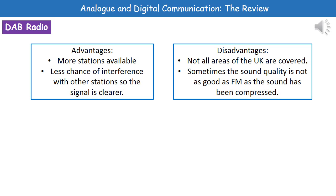There are, however, some clear disadvantages to DAB radio as well. The first is that not all areas of the UK are covered, so if you've got it in your car, you've probably noticed as you're driving along that you have a signal and then all of a sudden it goes, because you've hit an area not covered by the DAB signal. The other problem is that sometimes the sound quality isn't as good as FM radio, because the sound is compressed for transmission — like getting a lower quality MP3 where compression causes some loss of quality.